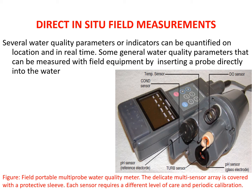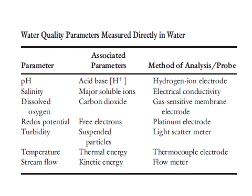This is a field portable multi-probe water quality meter with different probes: one for pH, one for turbidity, one for dissolved oxygen, one for temperature, and one for conductivity — five to six sensors indicating water quality. Water quality parameters measured directly in water include pH, salinity, dissolved oxygen, redox potential, turbidity, temperature, and stream flow.